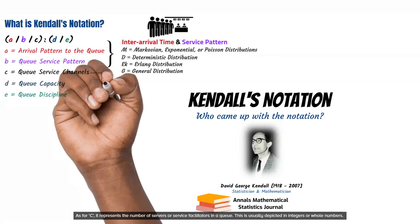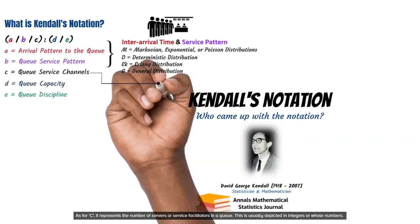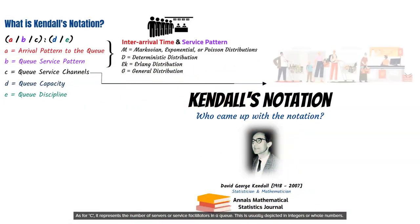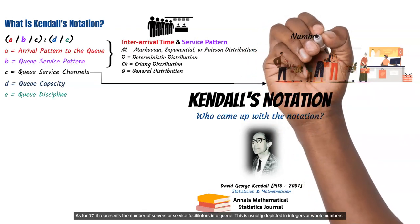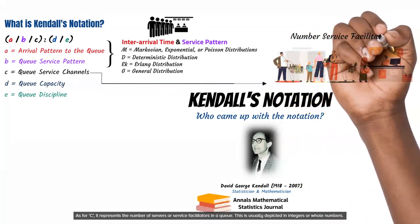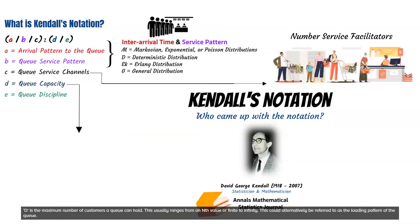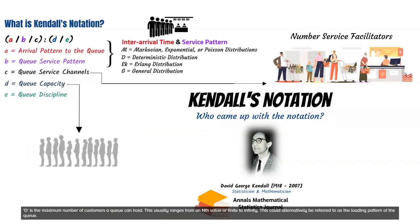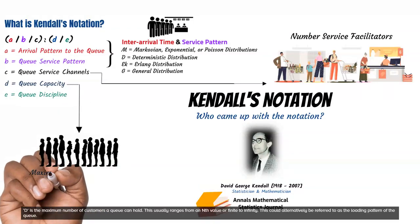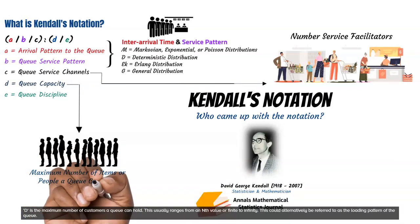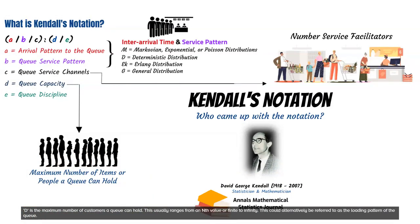As for C, it represents the number of servers or service facilitators in a queue, usually depicted in integers or whole numbers. D is the maximum number of customers a queue can hold, which usually ranges from a finite nth value to infinity. This could alternatively be referred to as the loading pattern of the queue.